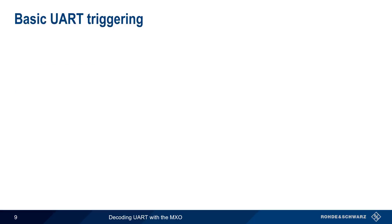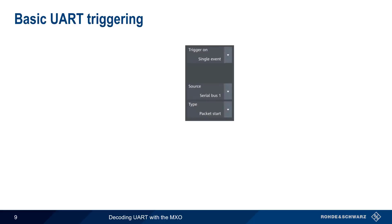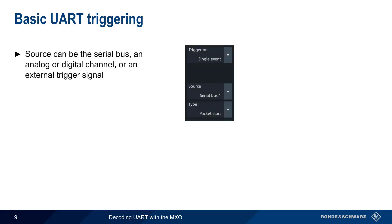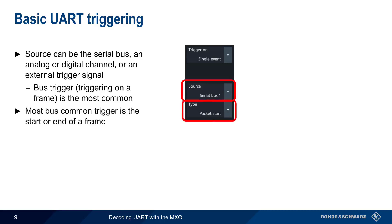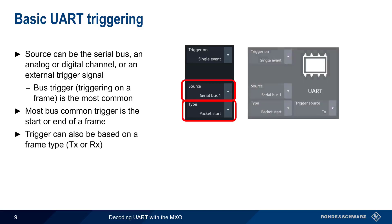The next step is configuring a trigger. Basic forms of triggering used to initiate data acquisition include an event on the serial bus, a voltage on an analog or digital channel, or an external trigger signal. A bus trigger — that is, triggering on a UART frame or on its contents — is the most common form of trigger used when performing UART decodes. In most cases, the bus trigger occurs either on the start or on the end of a frame. It's also possible to trigger on a specific frame type.